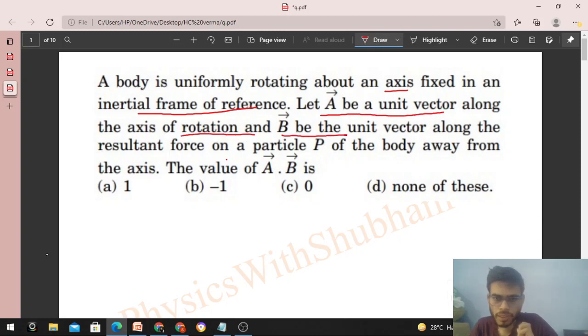And B be the unit vector along the resultant force on a particle P of the body away from the axis. The value of A dot B is... So this way we have an axis, and this way body uniformly rotates about this axis.